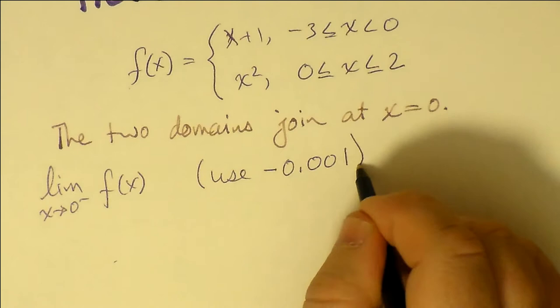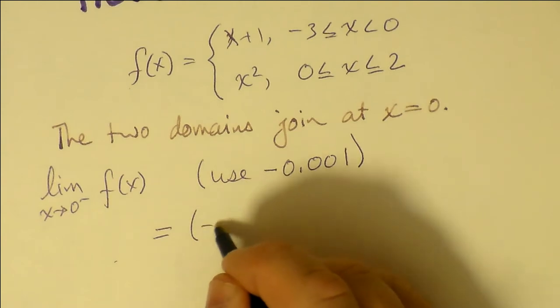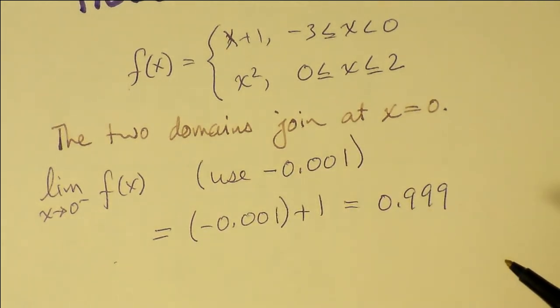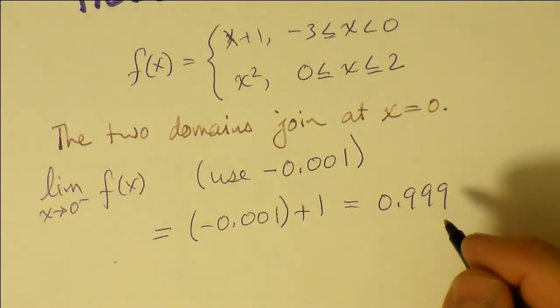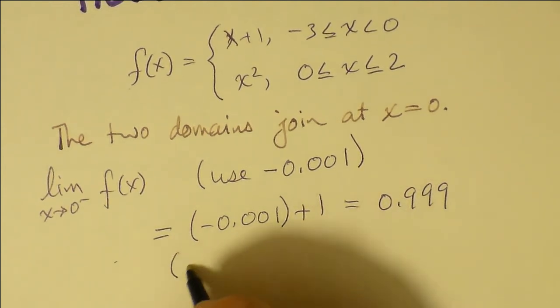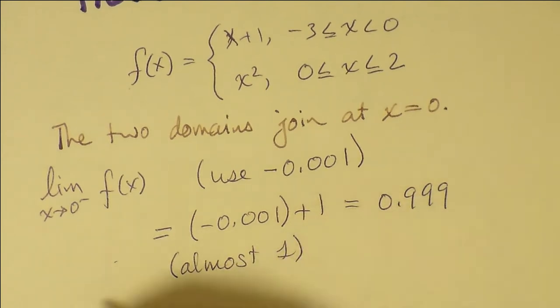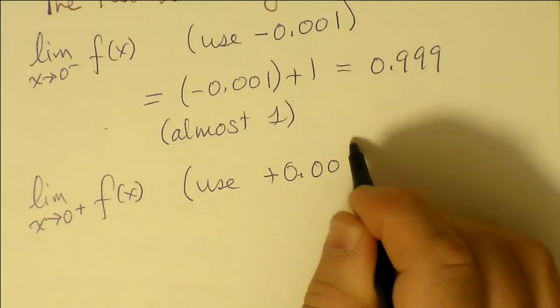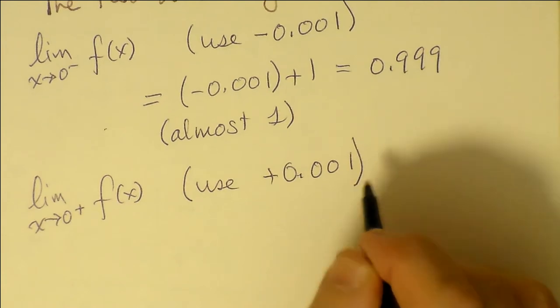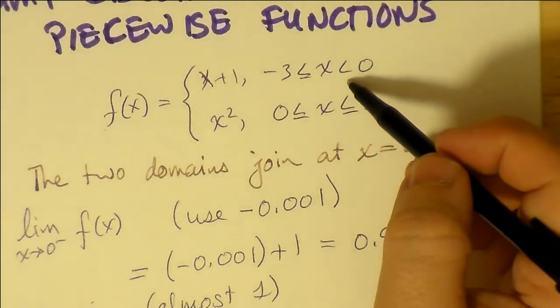From the left, we shall use a number just less than 0. Let's try negative 0.001, and we get 0.999, because we need to apply negative 0.001, that value of x, to the first piece, x plus 1. So let's take the limit at that critical part of the graph where x equals 0, because that seems to be where the break occurs. So as we approach 0 from the right and take its limit, we get a number that's almost 1, about 0.999.